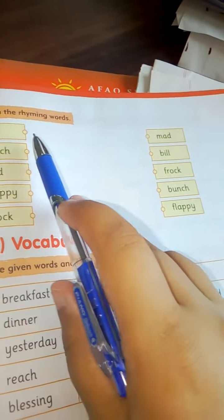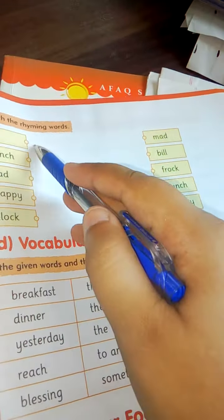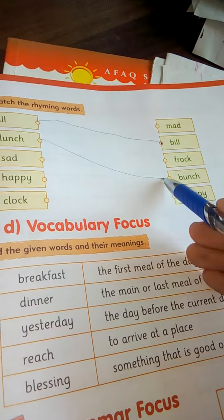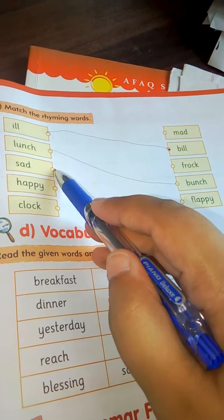Match the rhyming words. Ill, bill. We will write here lunch, bunch. Sad, mad.